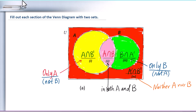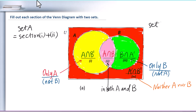Therefore, set A equals section 1 plus section 2. Set B equals section 2 plus section 3.